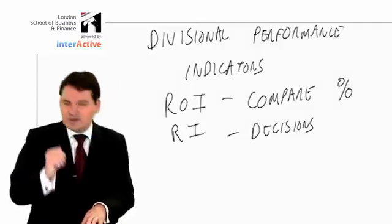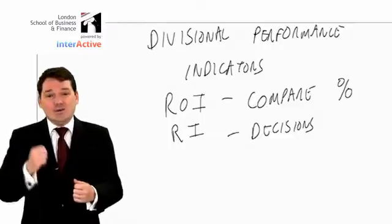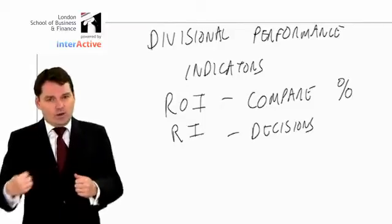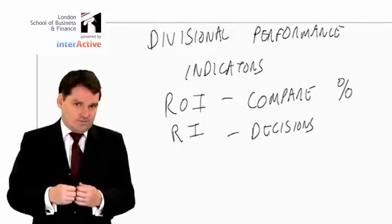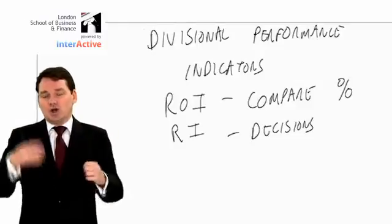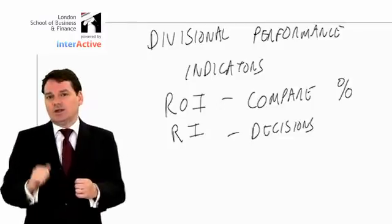For that, residual income is better because if something is good for shareholders, it will increase residual income. If residual income goes down, it's a bad decision for shareholders. So if you want your managers to make decisions that increase shareholder wealth, you should judge them on residual income.